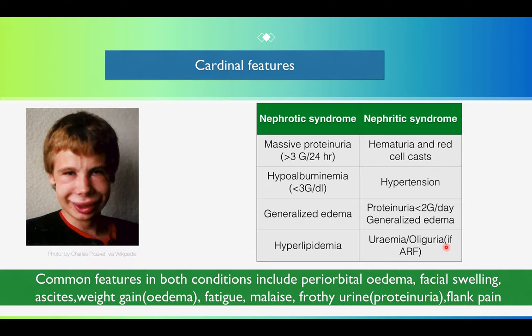Number 2C is the cardinal features. What are the cardinal differences or features in nephrotic and nephritic syndrome? It depends on the pathophysiology. In nephrotic syndrome, more protein is lost, so cardinal feature number 1 is massive proteinuria. Because of massive proteinuria, albumin is also lost in the urine, causing hypoalbuminemia in the blood. Because albumin is the major oncotic pressure maintaining fluid in the intravascular space, its loss causes fluid to accumulate in the interstitial space, resulting in generalized edema. Another feature is hyperlipidemia in nephrotic syndrome.